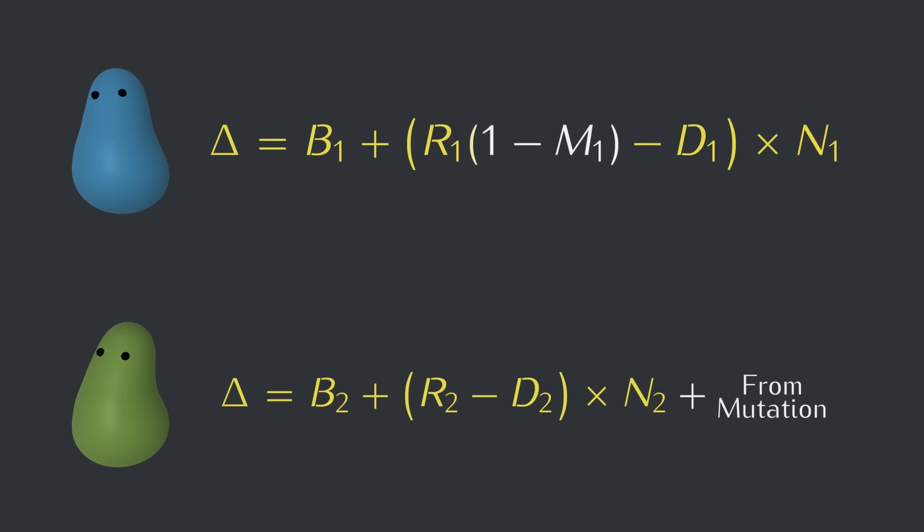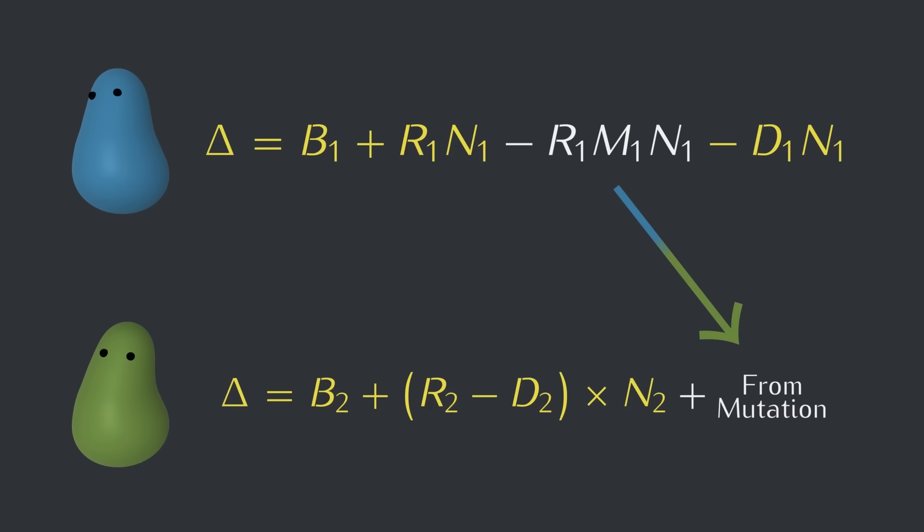Well, if we multiply out the blue equation to get rid of all the parentheses, we can see this term here, which stands for the blue creatures that would have come from replication, but were instead born green due to mutation. These are the same creatures being added to green's numbers, so we can use the exact same expression except added.